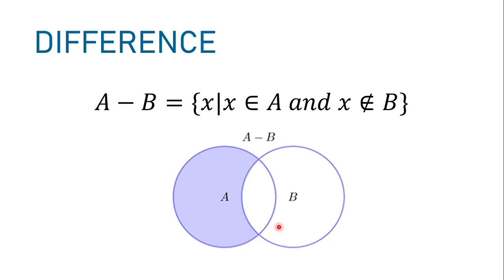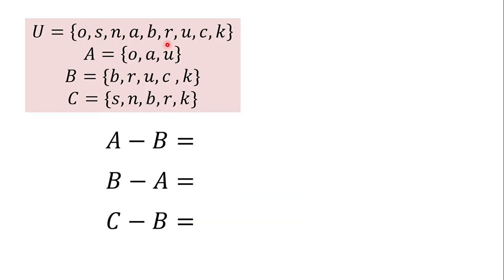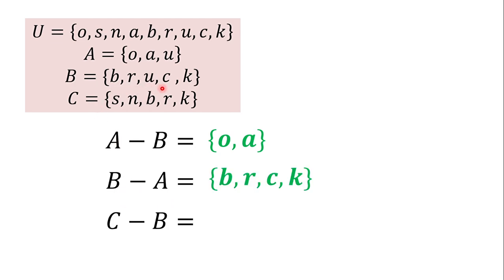The third operation is the difference. A minus B equals the set of X such that X is an element of A and X is not an element of B — meaning only elements in A that are not in B. For example, A minus B gives O and A, since U is found in B. Vice versa, B minus A gives B, R, C, K. And C minus B is S and N. In summary: A only, B only, and C only.